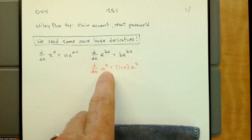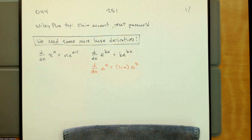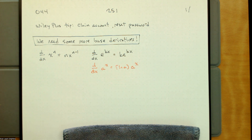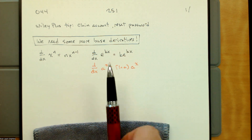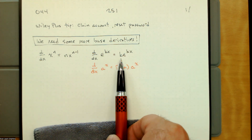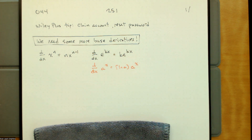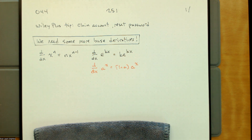Yesterday we talked about where e to the kx comes from, based on our description of how an exponential function's rate of change works. The rate of change of an exponential function is proportional to the exponential function, and the constant of proportionality is the natural log of the base — or equivalently, the continuous percent increase or decrease. All that is to remember this: the derivative of e to the kx is k times e to the kx.